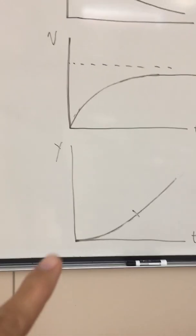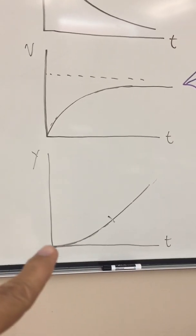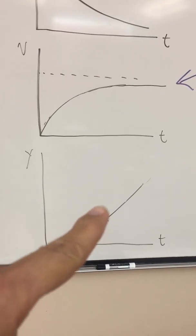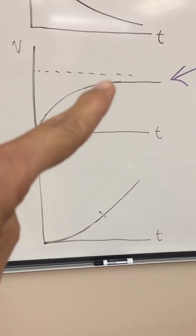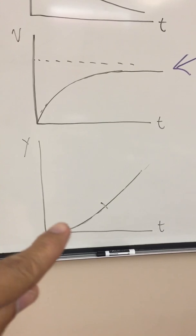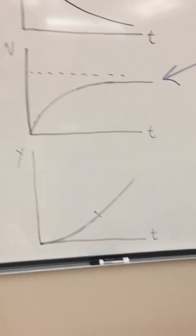So the graph of position versus time starts out parabolic and at some point makes a transition. Somewhere around here it changes from being parabolic to just a linear graph.